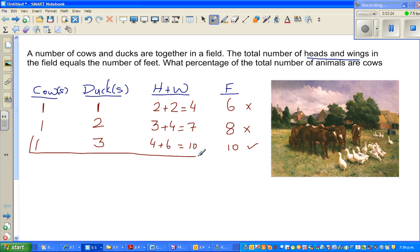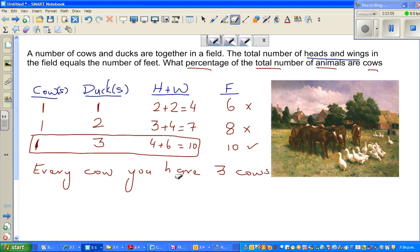Now here you should not misunderstand this answer. The question is not how many cows and how many ducks are there. The question is what percent of the total number of animals are cows. So this is an example of a ratio. What does this one and three mean? For every cow you have three ducks. This is what it means. This does not mean that the field has one cow and three ducks. It may be possible, but you can't say that is true.